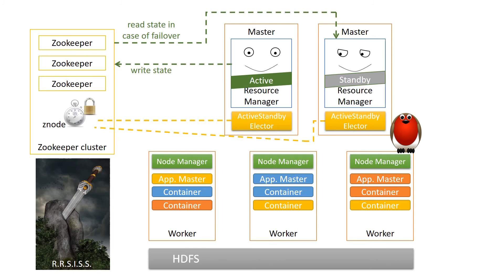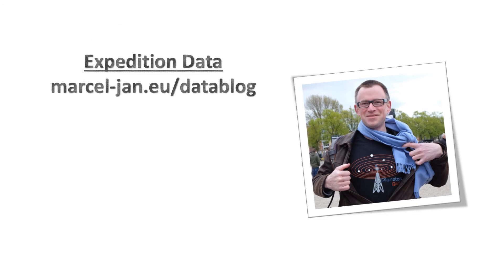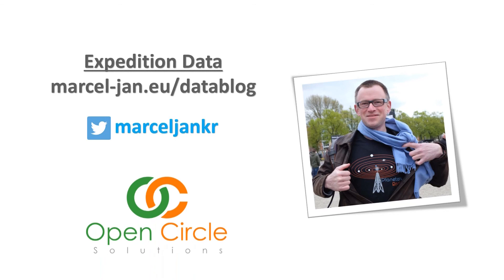Well, that's it for now on YARN high availability. There's quite a bit more to tell on Hadoop high availability in practice, but I'll keep that for another video. This is me, Marcion Kreigsmann. If you want to know more, I have a blog called Expedition Data. I also have a Twitter account. And if you need a data engineer, that would be great — I'm ready for it. You can find me at my employer, OpenCircleSolutions.nl.